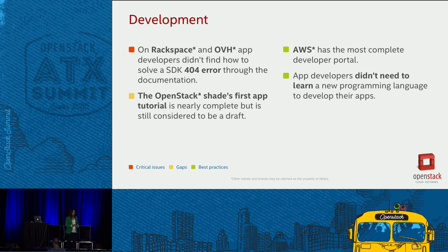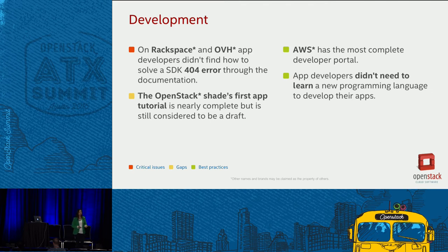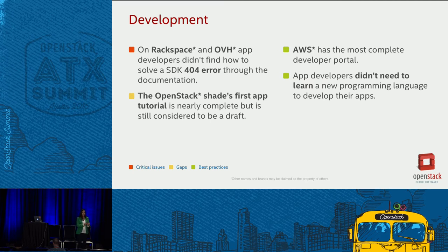In the development stage, developers followed all the tutorials choosing an available language on the cloud. The good news is that developers didn't have to learn a new programming language — all the languages developers like are available on the clouds. The preferred ones were Java, Python, PHP, and C#. For MyFirstApp, it's only available for one SDK, LibCloud. Developers said AWS has the most complete developer portal because it's very well organized, has many tutorials for different languages, and some videos.